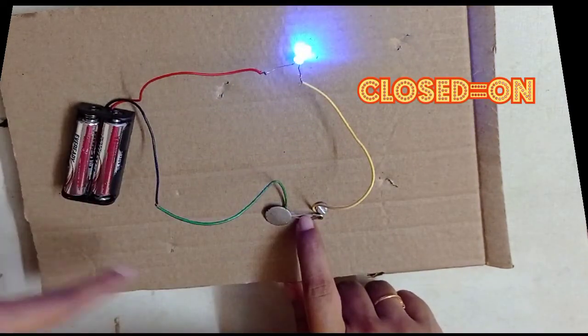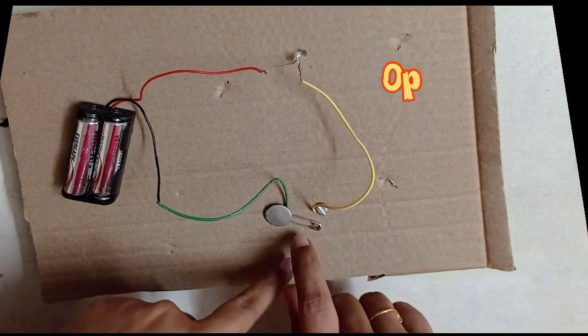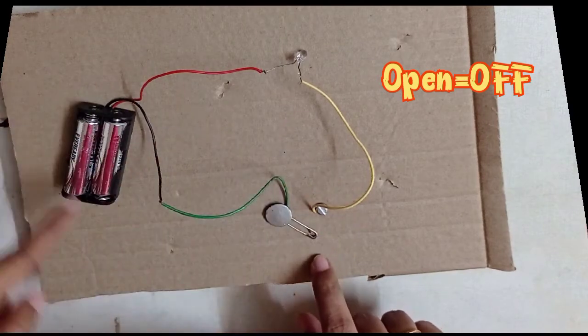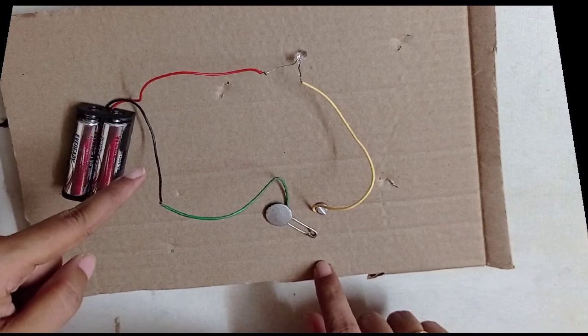The circuit is in closed condition. The switch is set to be on. When we remove the safety pin, the circuit is set to be open and it is in off condition.